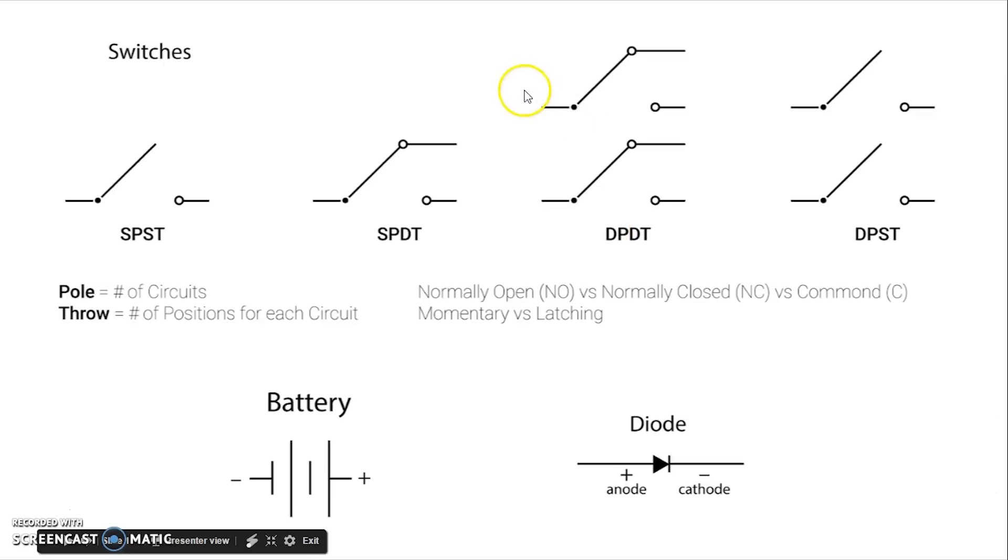And so as you move on to the double pole double throw, again you have two inputs and two outputs for each of those inputs because the throw is for each of the poles. So two coming in and each of those can go to two possible outputs.